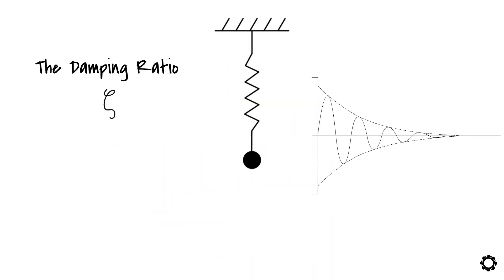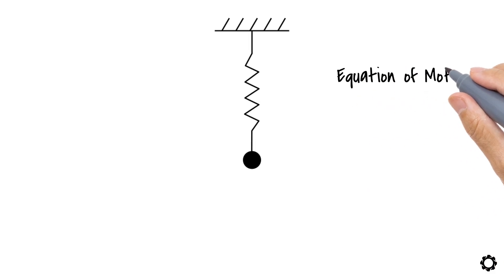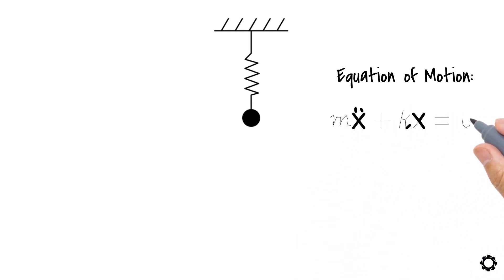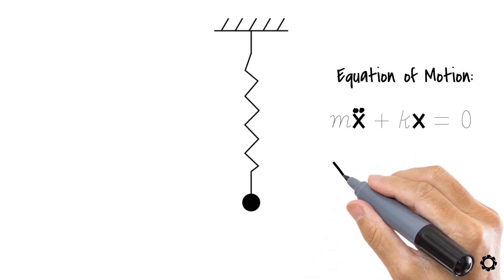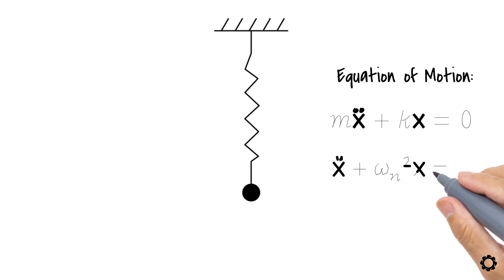To understand where this damped natural frequency comes from, let's take a look at the equation of motion of our friend, the free undamped spring mass system. The motion of this system can be mathematically described as mx double dot plus kx equals 0, which can also be presented in the standard form x double dot plus omega n squared times x equals 0.